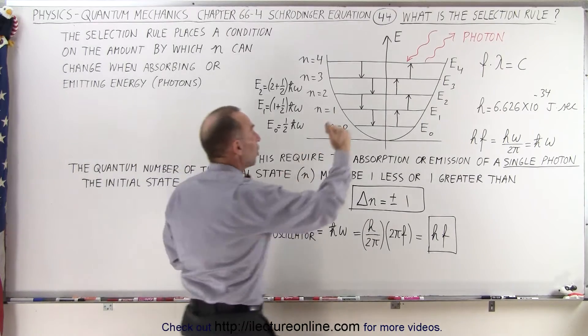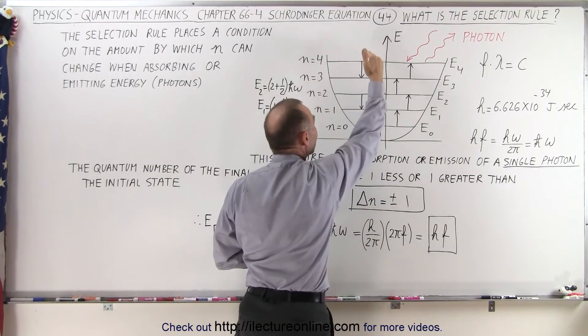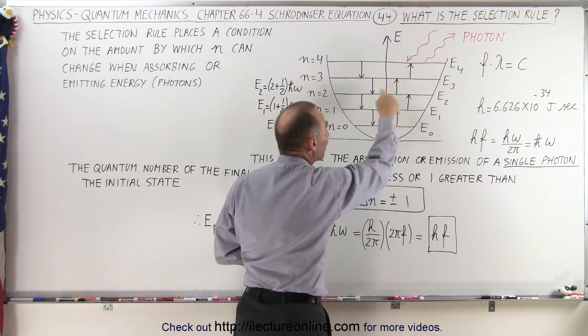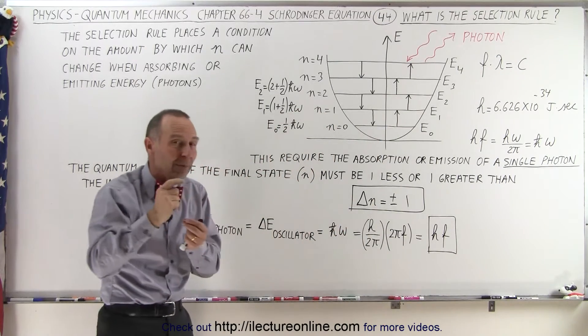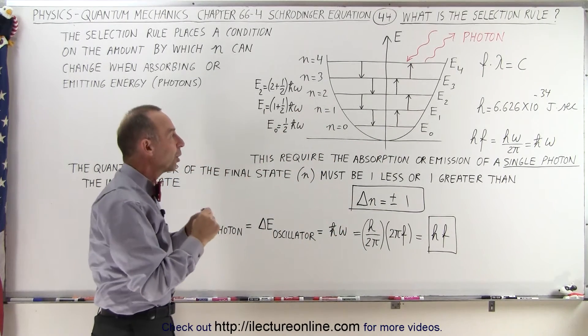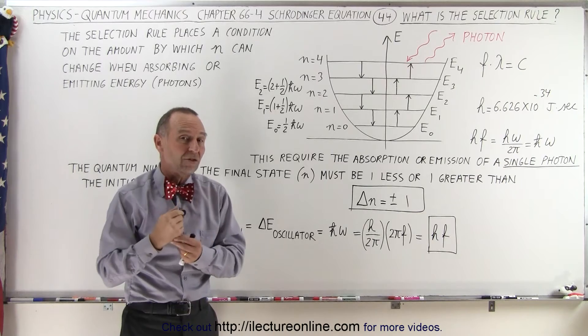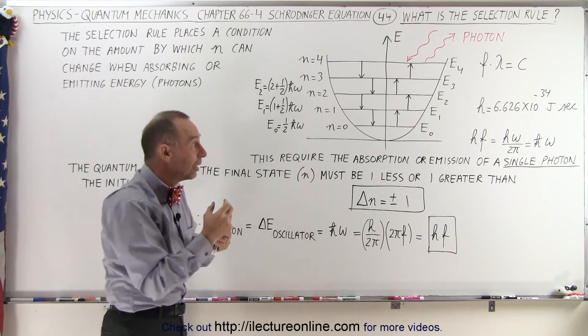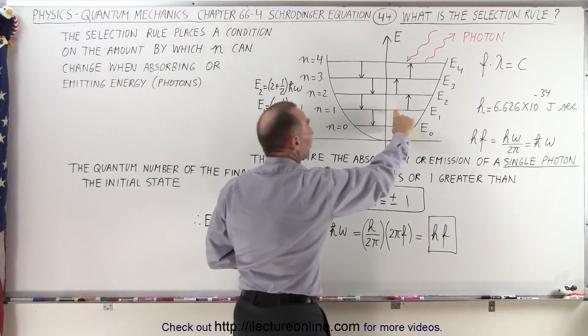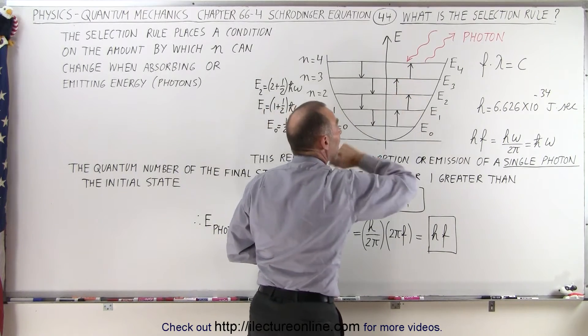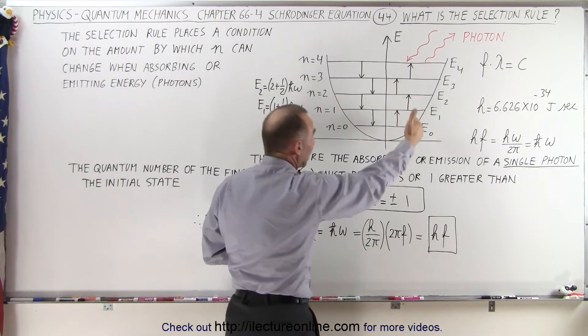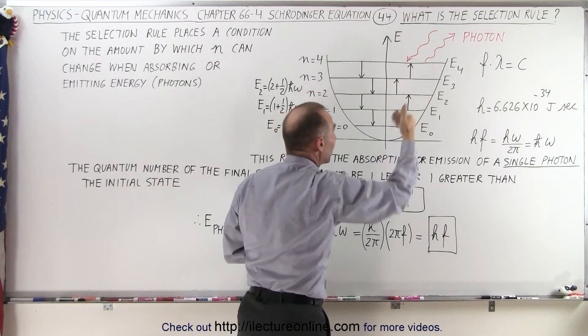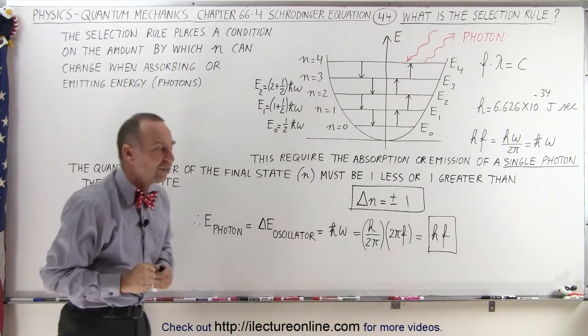The energy cannot jump all of a sudden two or three or four states. The change, as you can see by this arrow, simply indicates it can only be one state at a time. The harmonic oscillator can only absorb a photon with energy equal to the difference between any two adjacent states, for example, from E₁ to E₂ or from E₂ to E₃, and it cannot do two states at the same time.